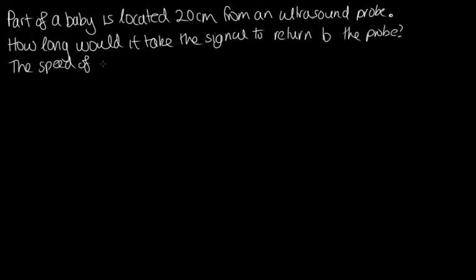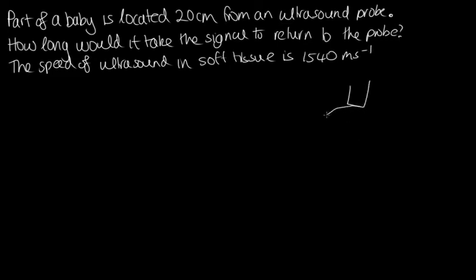The speed of ultrasound in soft tissue is 1,540 meters per second. We've got a probe here, and there's a baby down here. The signal comes down and is reflected back up to the probe. This distance is 20 centimeters, so the signal has to travel down to the baby and back up.